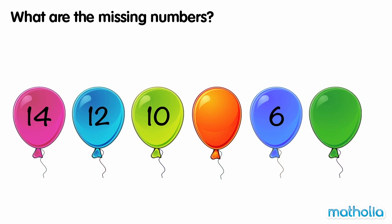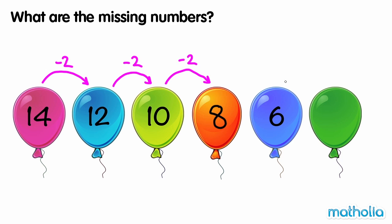What are the missing numbers? 14 minus 2 is 12, 12 minus 2 is 10. In each step the numbers are going down by 2. 10 minus 2 is 8, 6 minus 2 is 4. The missing numbers are 8 and 4.